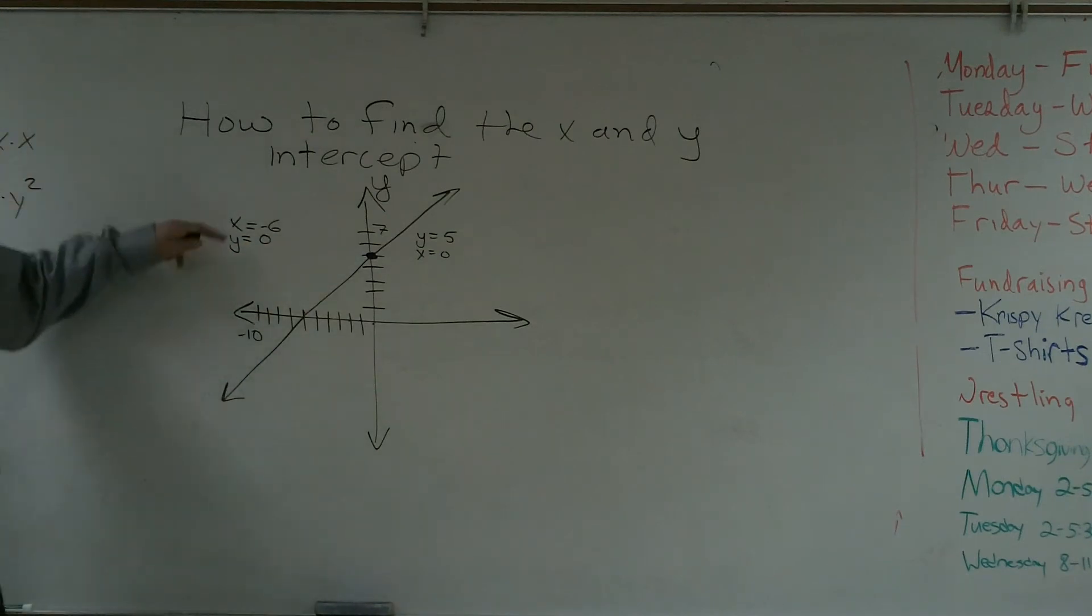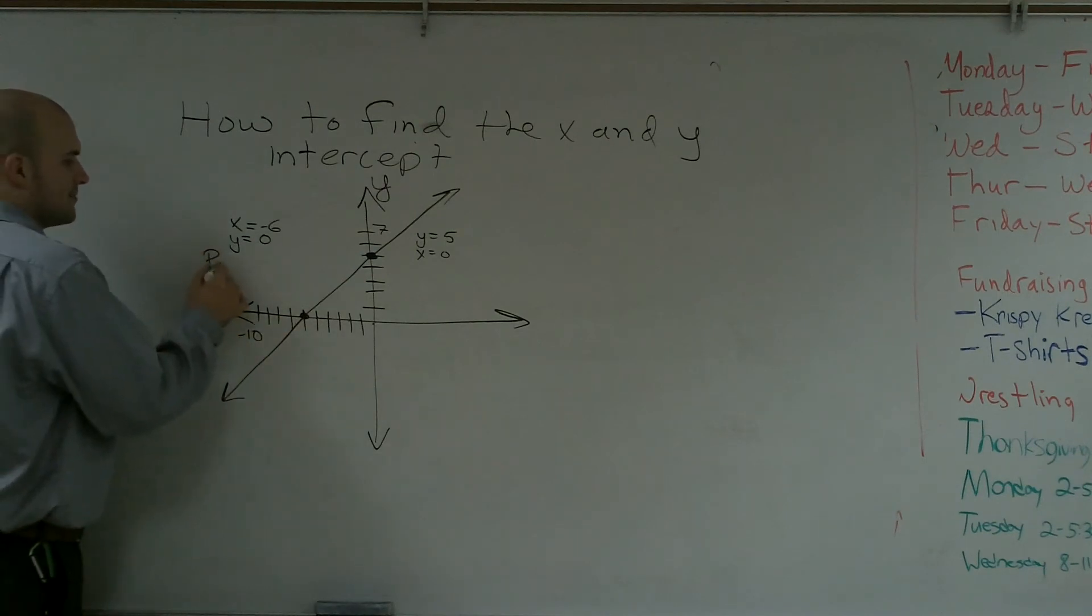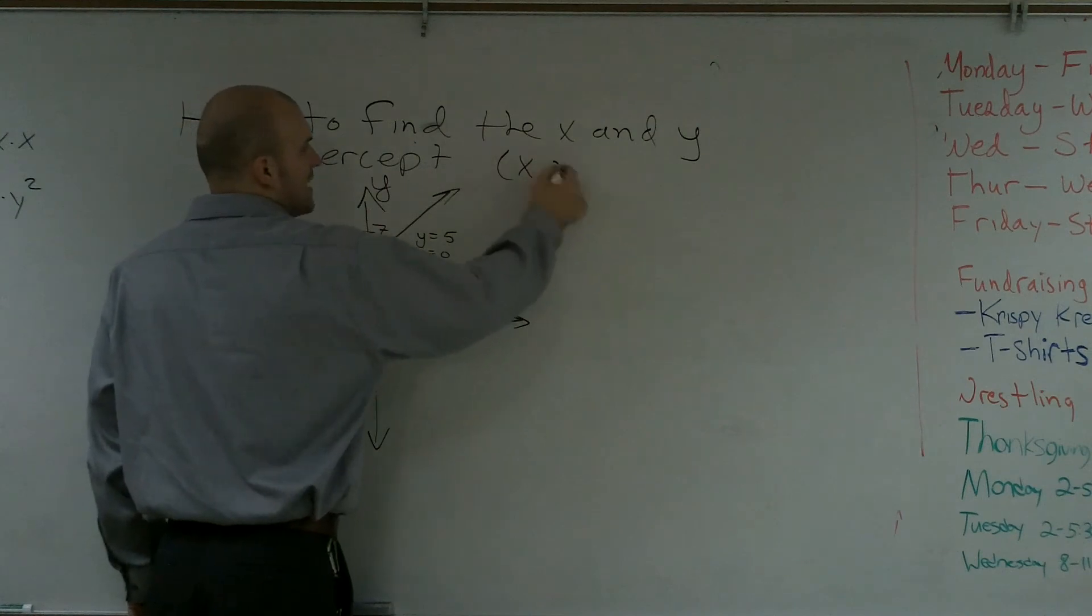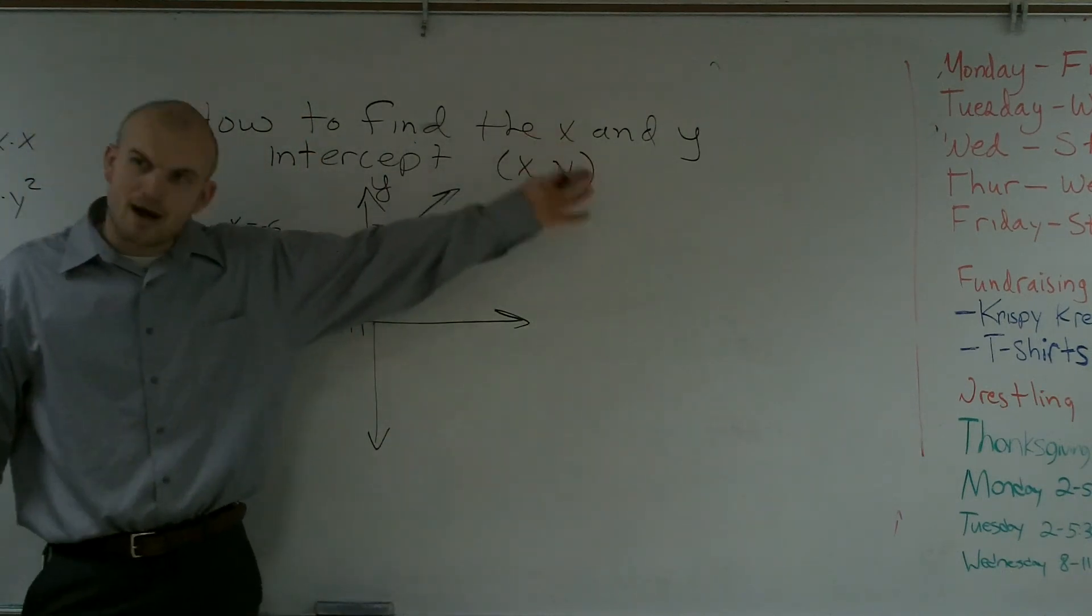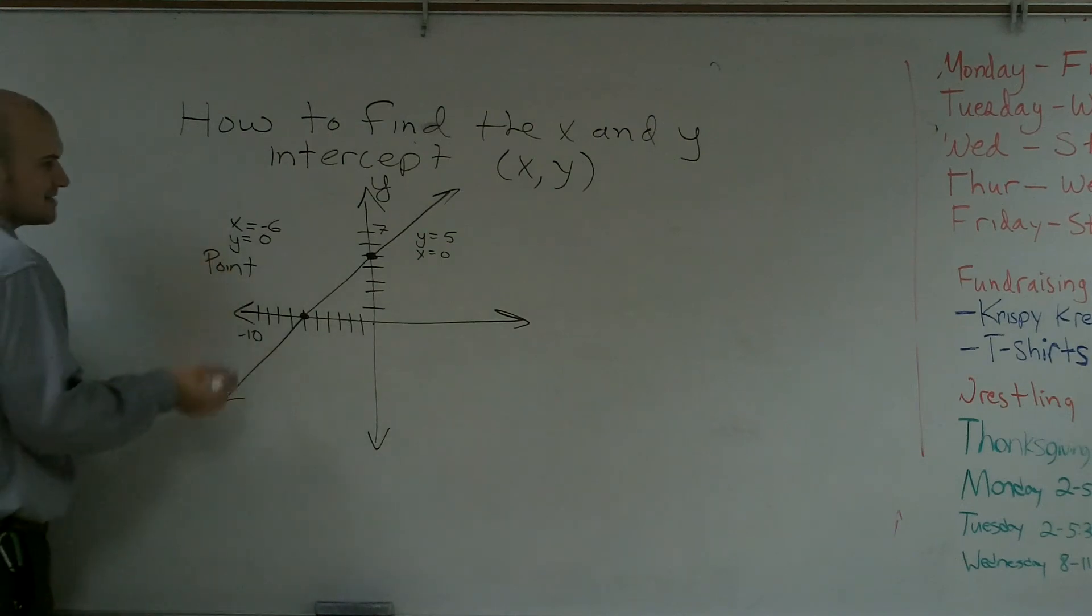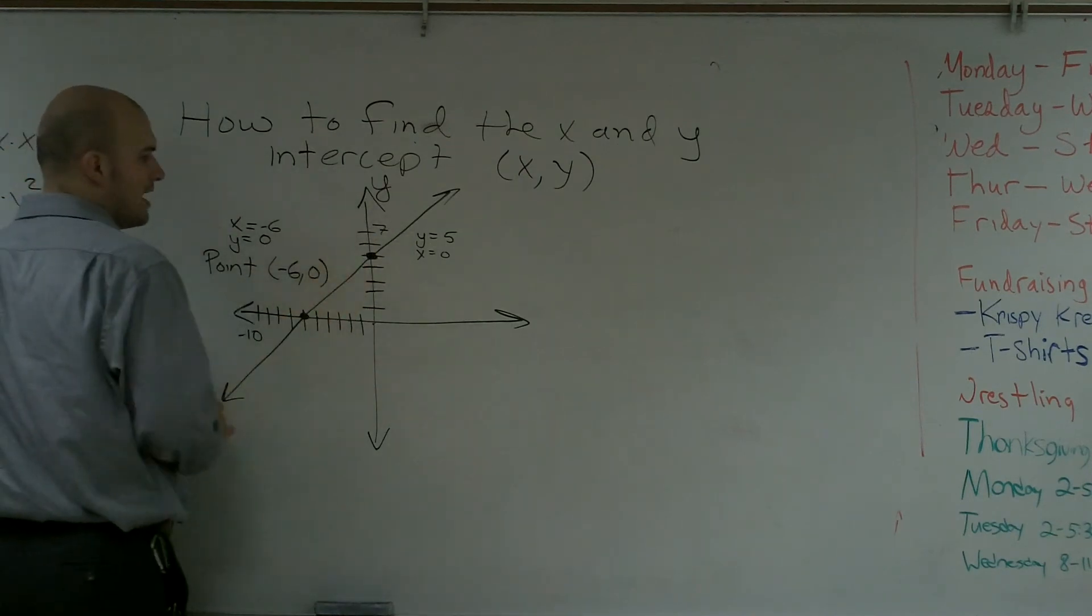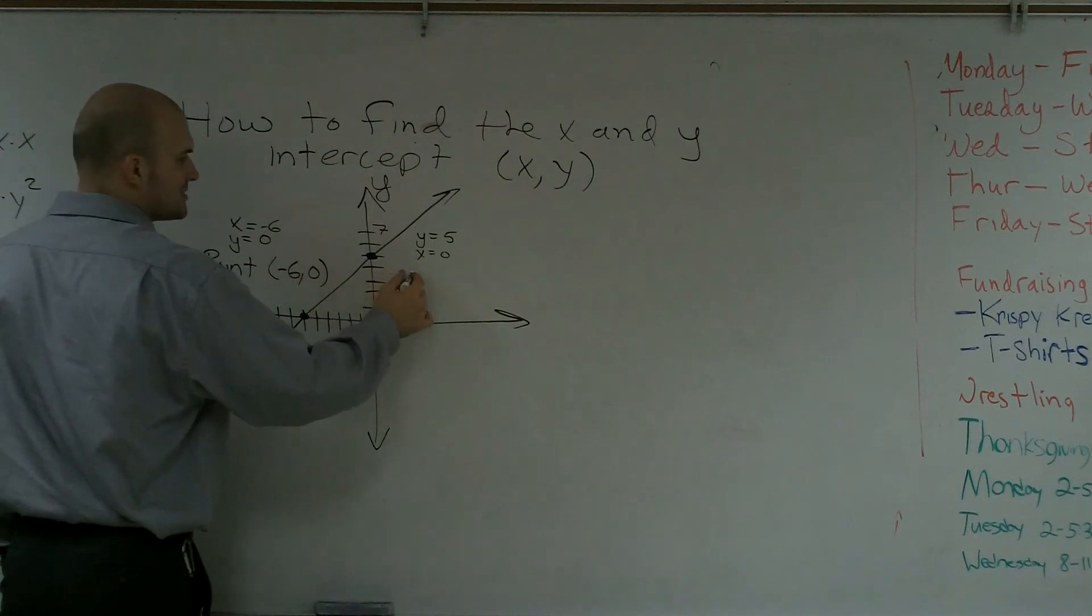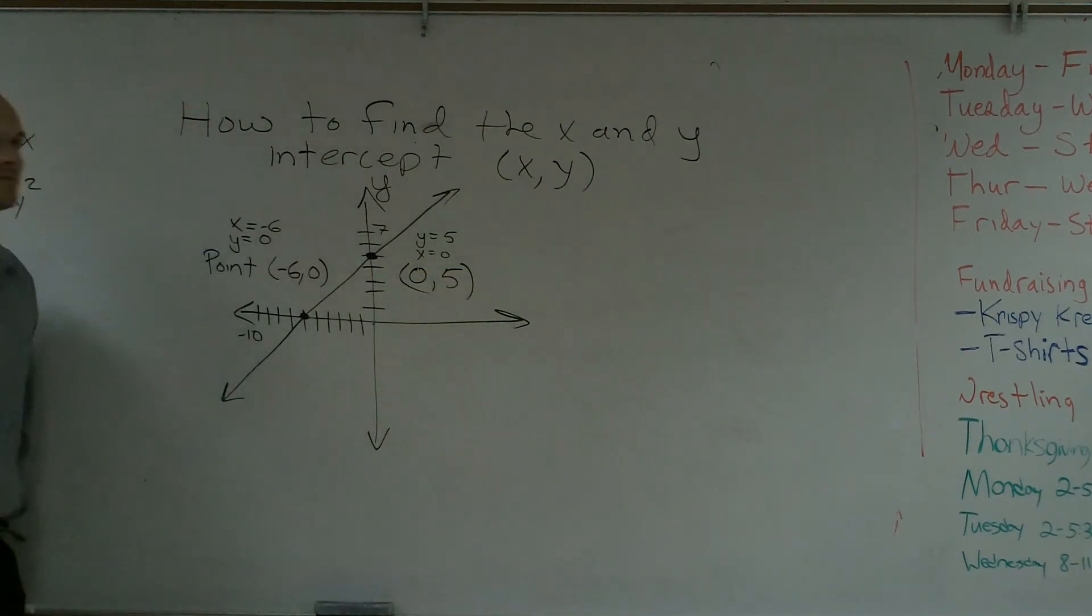So you can either write the x intercept is at x equals negative 6, or a lot of times we like to write the point. And remember, all points are written in the form of x comma y. So all you do is you write what x equals first, and then you write what y equals. So x equals negative 6 for here. So it would be negative 6, 0. Over here, my y-intercept is going to be 0 comma 5.